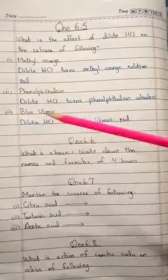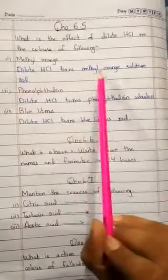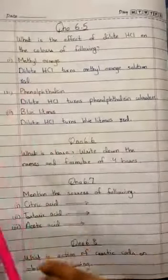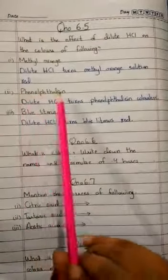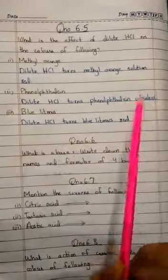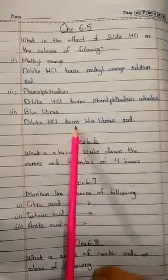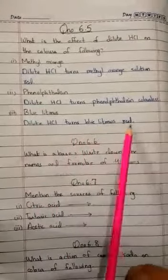First, dilute HCl turns methyl orange solution red. Next is phenolphthalein: dilute HCl turns phenolphthalein colorless. Third is blue litmus: dilute HCl turns blue litmus red.